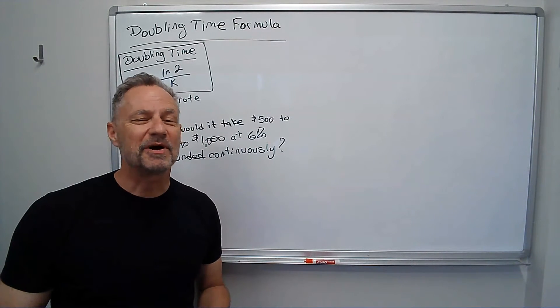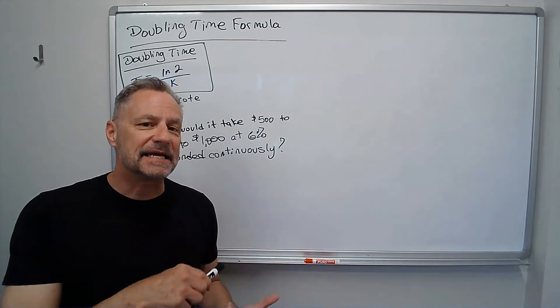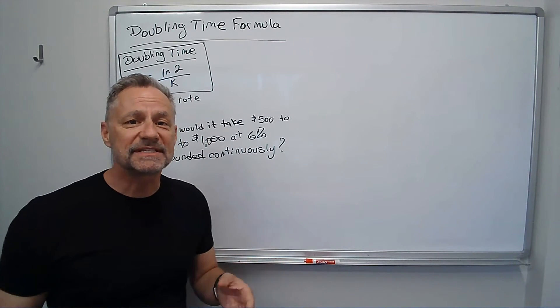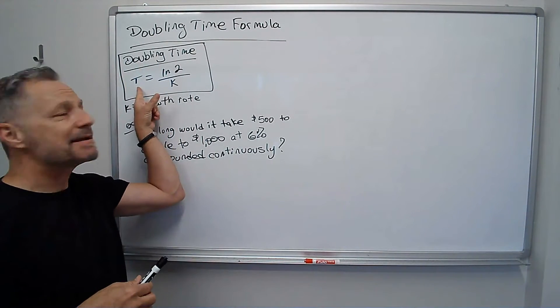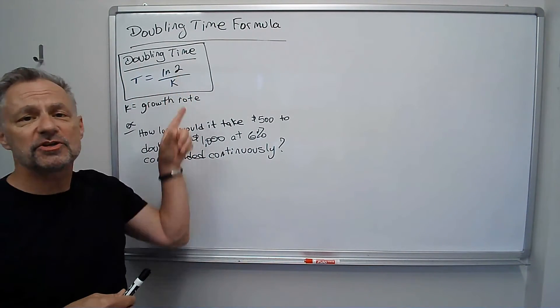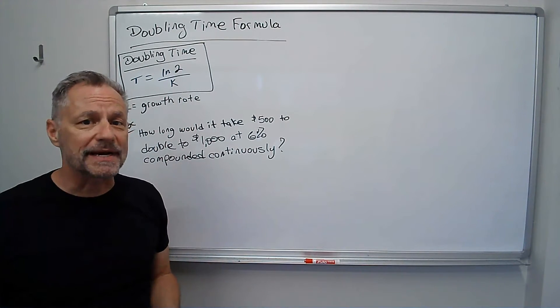Hi there, Professor Monty, and I want to explain the doubling time formula to you. Real simple formula, the doubling time t is just ln of 2 divided by k, where k is whatever the growth rate is.